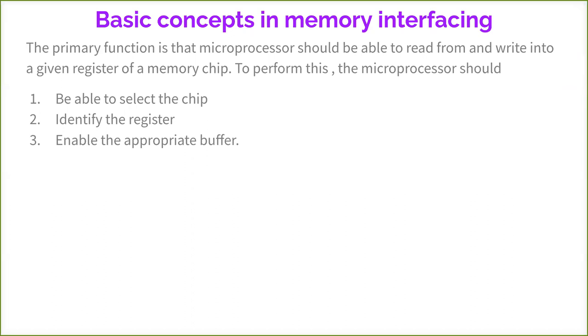What are the basic concepts in memory interfacing? The primary function is that the microprocessor should be able to read from and write into a given register of a memory chip. To perform this, the microprocessor should be able to select a chip. Suppose some five memory chips are there, how we can select from which memory chip it has to read or write.